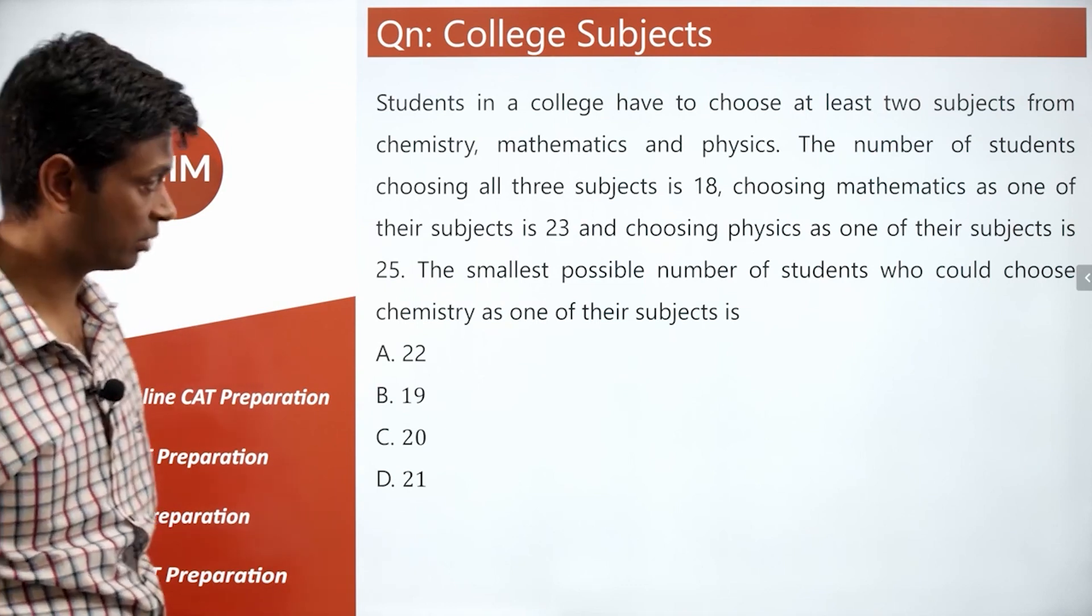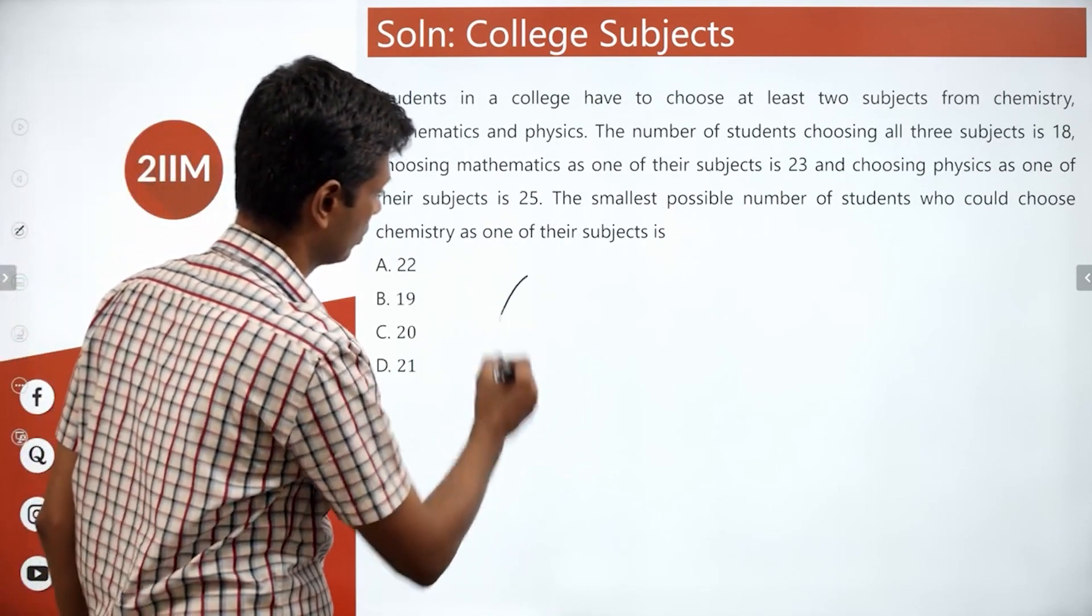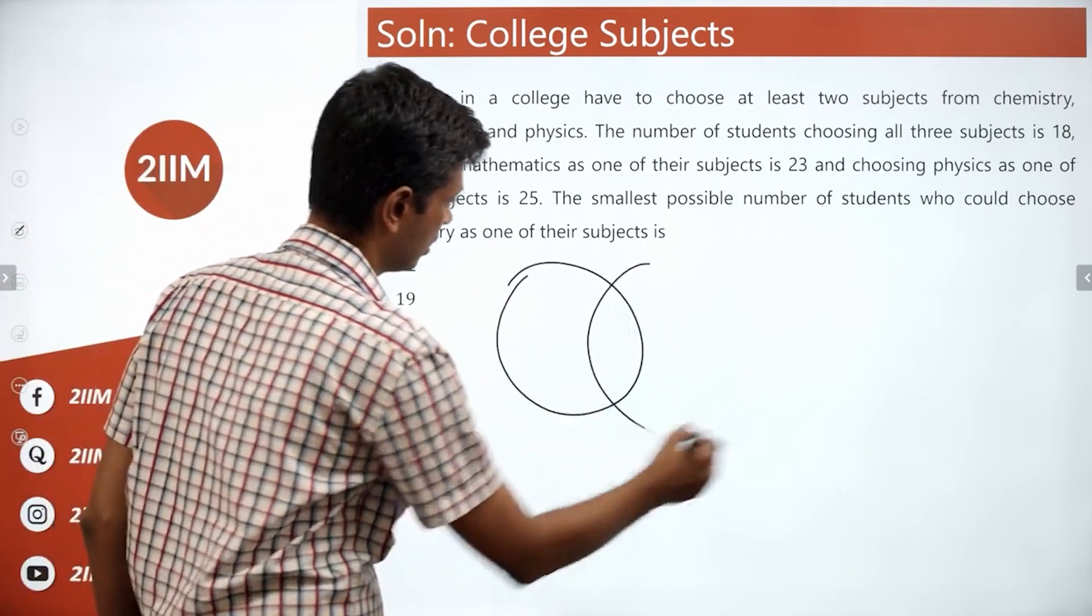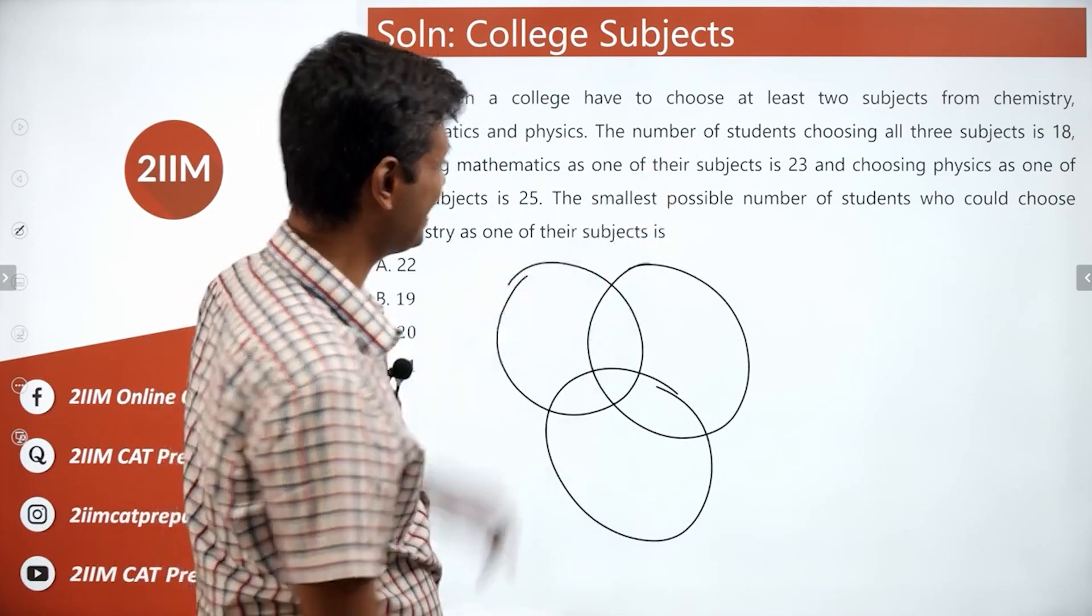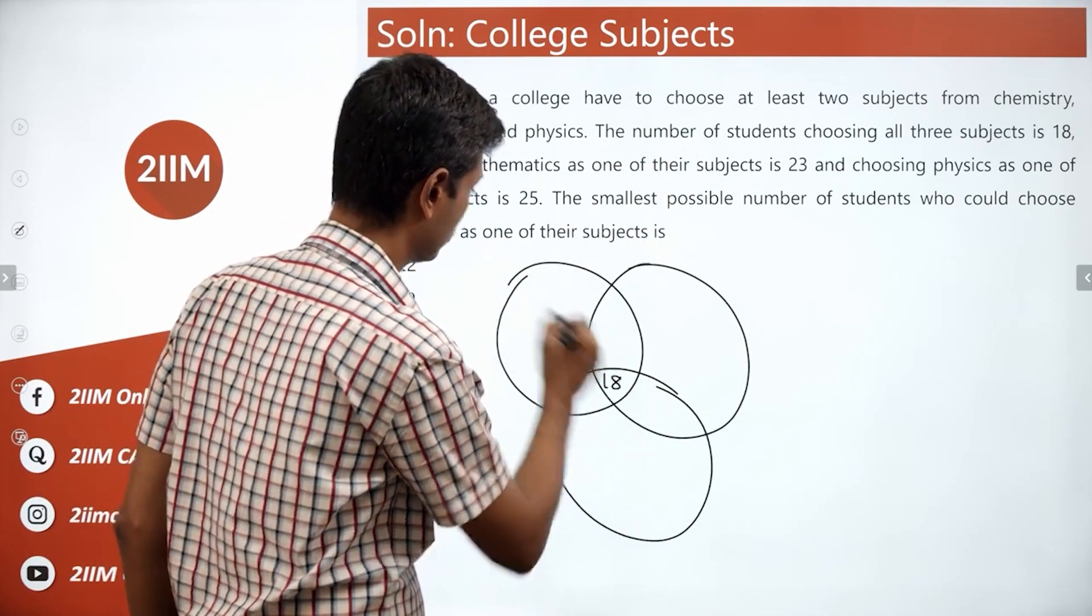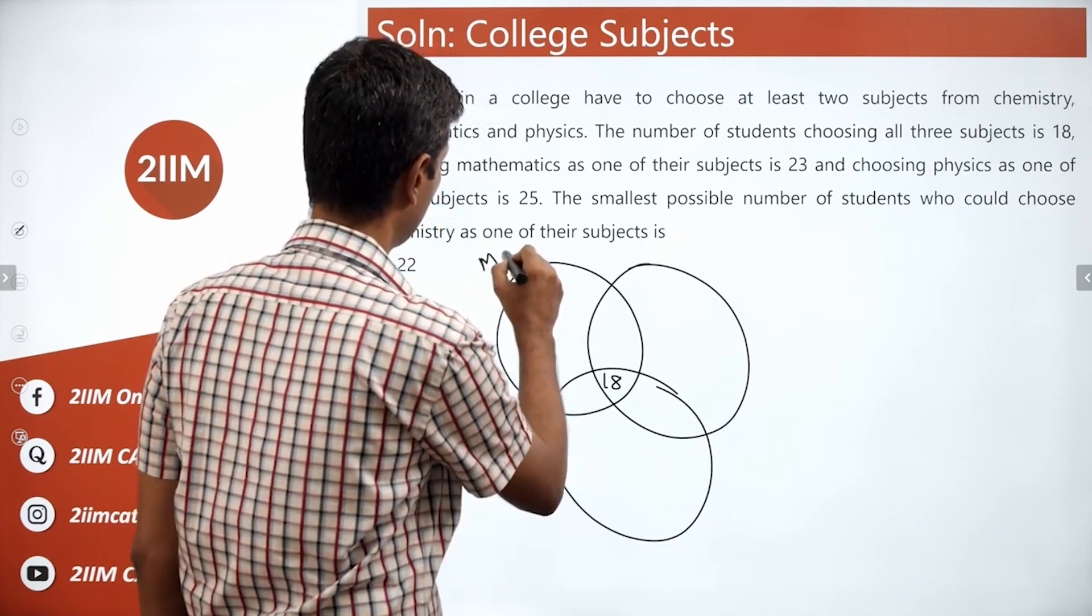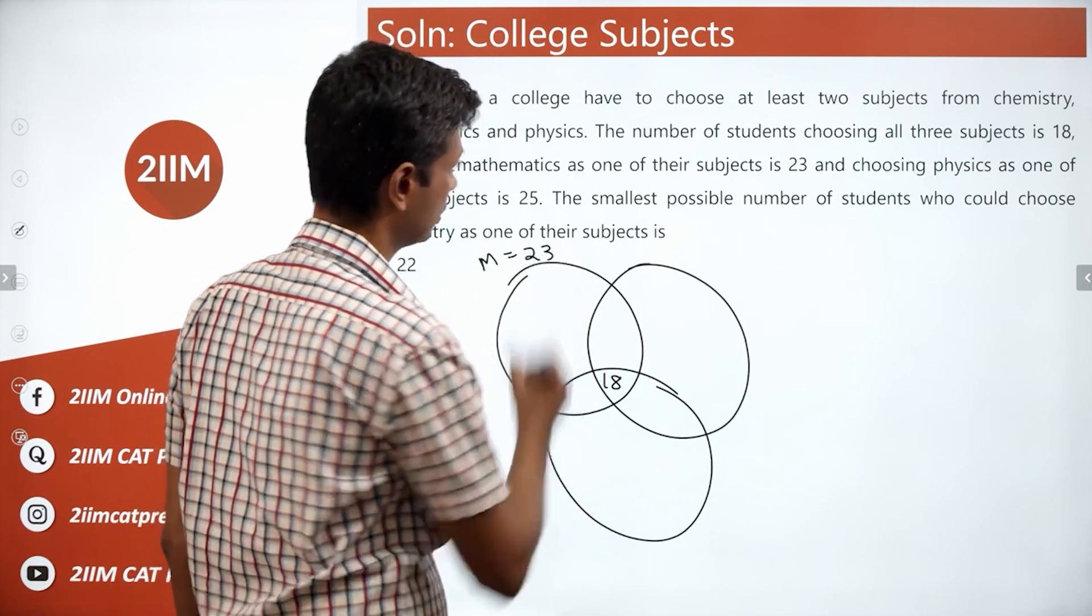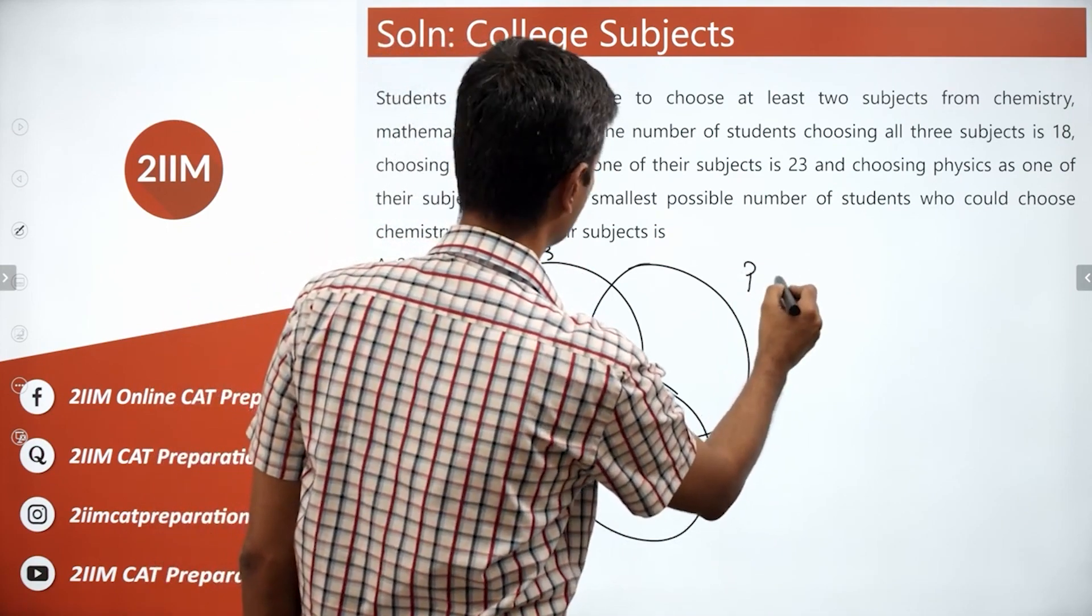Interesting. Start the diagram: maths, physics, chemistry. I like that. Number 18, that goes here. We have maths here. Number of students taking math is 23. Choosing physics is 25.